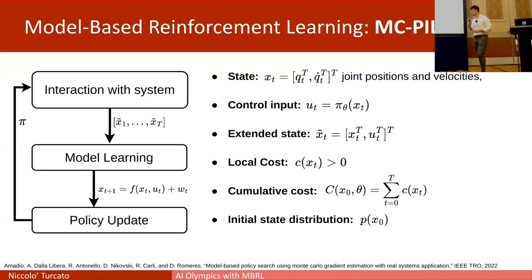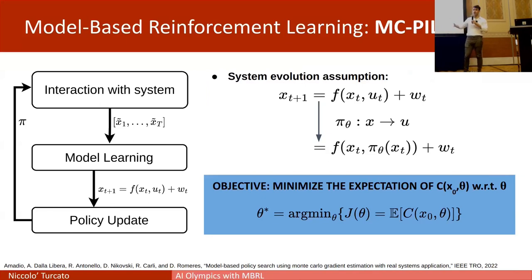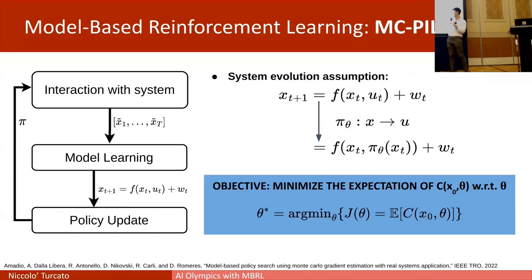In more detail, if we can express the system evolution as a function of inputs, the state, and the policy outputs, we can rewrite the objective as an optimization problem: the minimization of the objective function J(theta), which is the expectation of the cumulative cost with respect to the policy parameters.